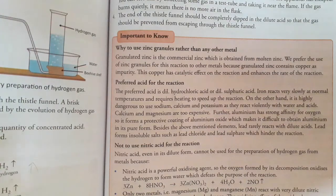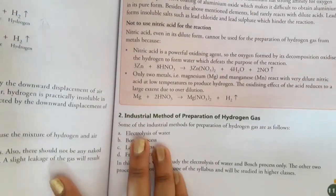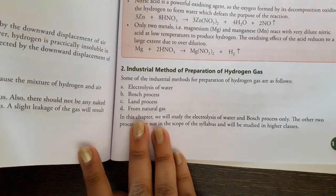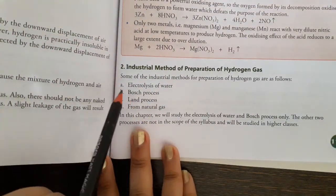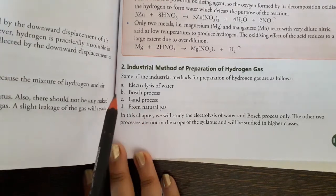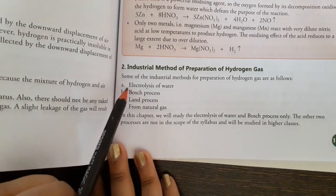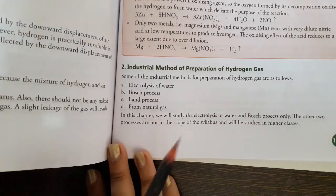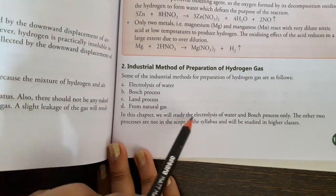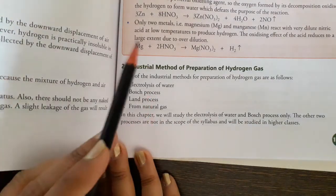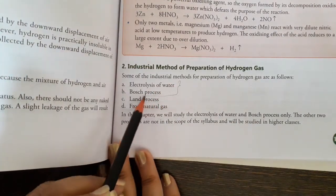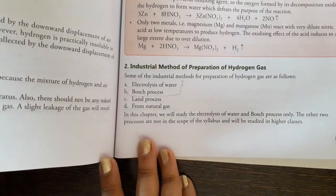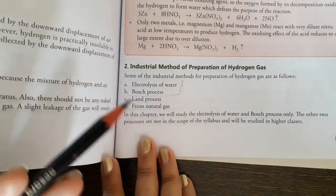Why produce hydrogen in laboratory? Industrial method of preparation of hydrogen: How can we produce hydrogen in industries? Electrolysis of water, Bosch process, Lane process from natural gases. We will study only two processes: electrolysis of water and Bosch process. The other two processes, Lane process and from natural gas, are not in the scope of the syllabus. You will study them in further classes.